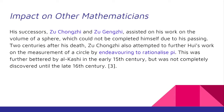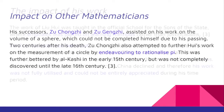His successors Zhu Chongzhi and Zhu Junzhi assisted on his work on the volume of the sphere, which could not be completed himself due to his passing. Two centuries after his death, Zhu Chongzhi also attempted to further Hui's work on the measurement of a circle by endeavouring to rationalize pi. This was further improved by Al-Kashi in the early 15th century, but was not completely resolved until the late 16th century.